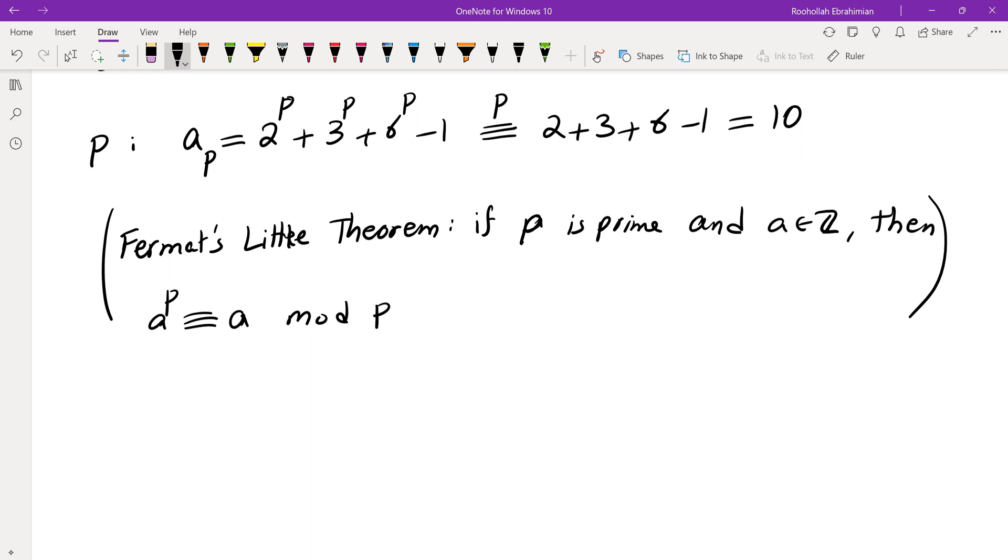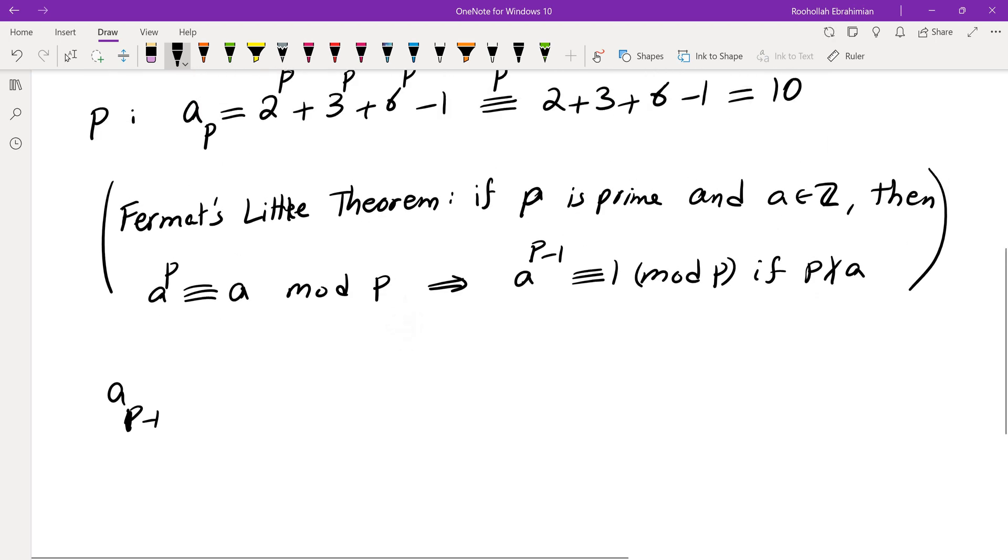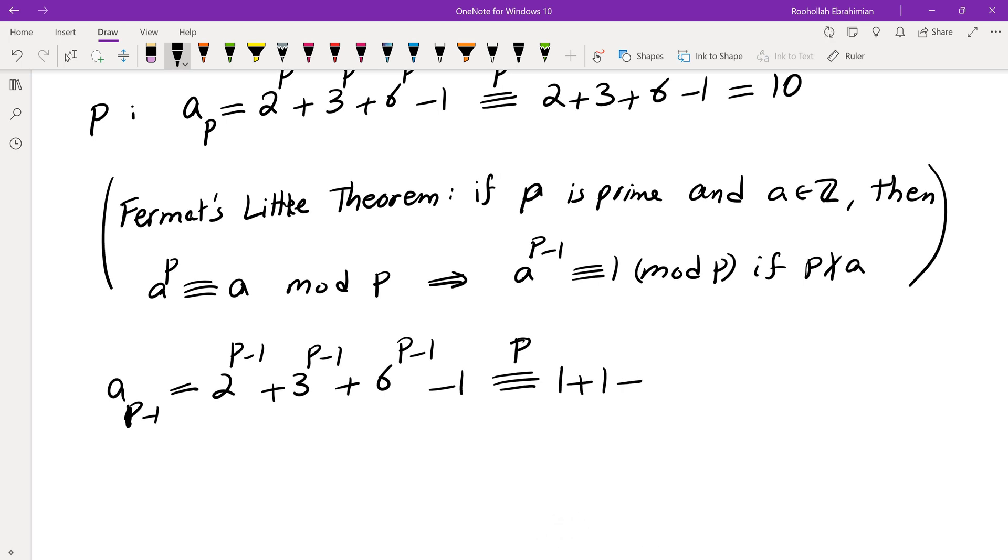So then I thought, okay, maybe I can plug in p minus 1 because I know how to evaluate a to the p minus 1. One of the consequences of Fermat's little theorem is a^(p-1) is in fact 1 mod p if p doesn't divide a. If I take that, that's 2^(p-1) plus 3^(p-1) plus 6^(p-1) minus 1. When we take that mod p, we get 1 plus 1 plus 1 minus 1, which is 2, which is of course not 0. So that wasn't very helpful.